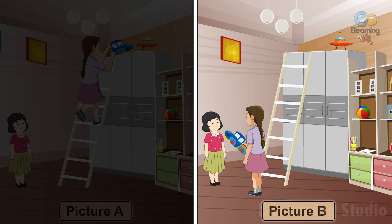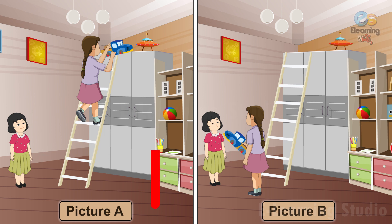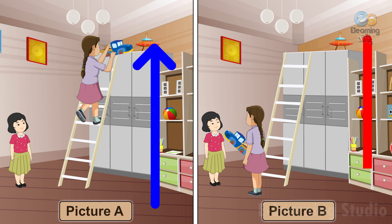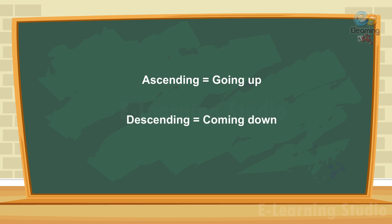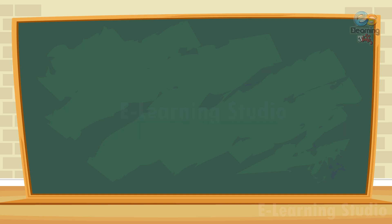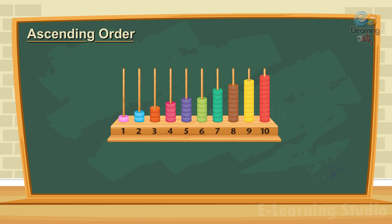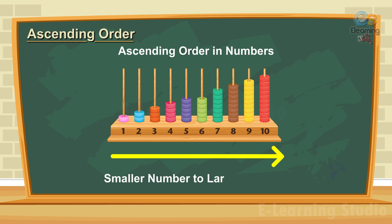In Picture B, Sony is coming down the ladder with a toy for her younger sister Moni — here she is descending the ladder. So ascending means going up and descending means coming down. Now in relation to numbers, let us discuss them one by one.